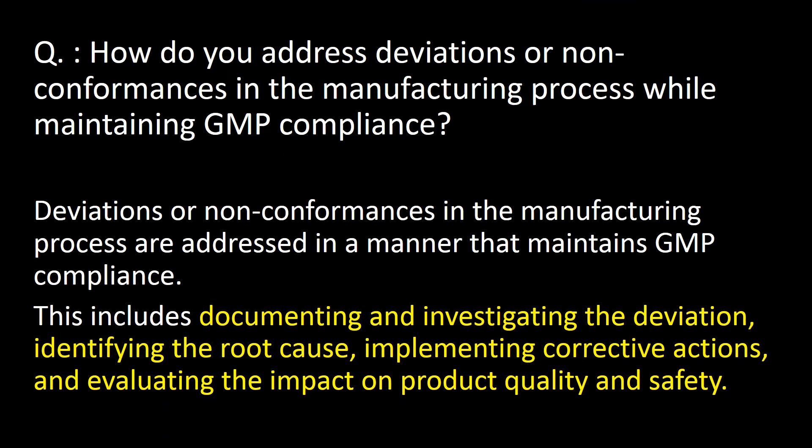How do you address deviations or non-conformances in the manufacturing process while maintaining GMP compliance? Deviations or non-conformances are addressed by documenting and investigating the deviation, identifying the root cause, implementing corrective actions, and evaluating the impact on product quality and safety.